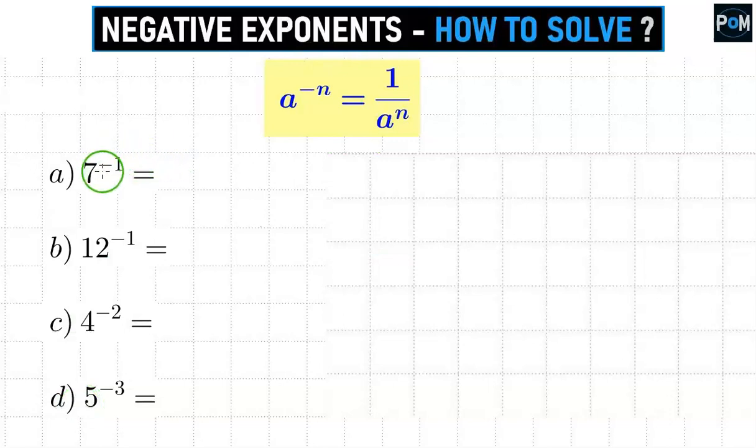When the exponent is negative, according to our formula, we need to draw a fraction bar. At the top, we see the number 1, and in the denominator, we write a to the power of n. That is what we had here, but without the minus. In our case, it is 7 to the first power, and this is simply 1 seventh.